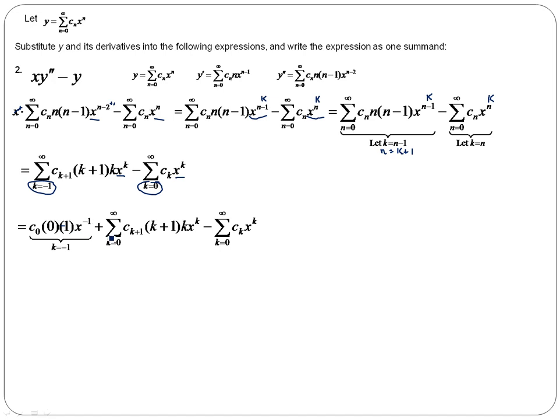and then I have my zero through infinity term. And this expression just gets copied. Minus my second term. And here this first expansion becomes zero because you're multiplying by zero here. So that drops out.